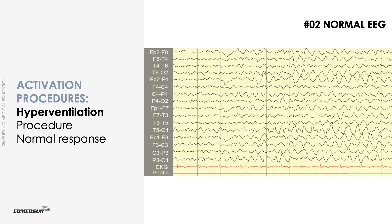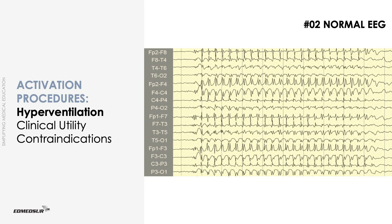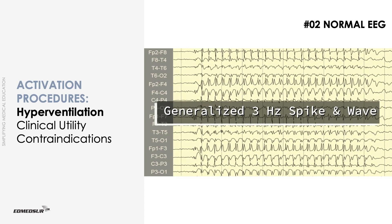Hyperventilation responses are age-dependent. They are most pronounced in children and teenagers. Hyperventilation is considered the most powerful activation procedure to elicit absence seizures, or, as this EEG shows, generalized 3 Hz spike and wave discharges.